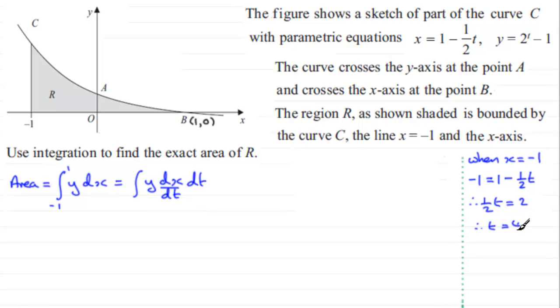Now we do exactly the same for this upper limit when x is one. So when x is one, what we have is one minus a half t equals one. If we subtract one from both sides and add half t to both sides, you get half t equals zero, and so that leads to t equaling zero. So you've got your upper limit there.